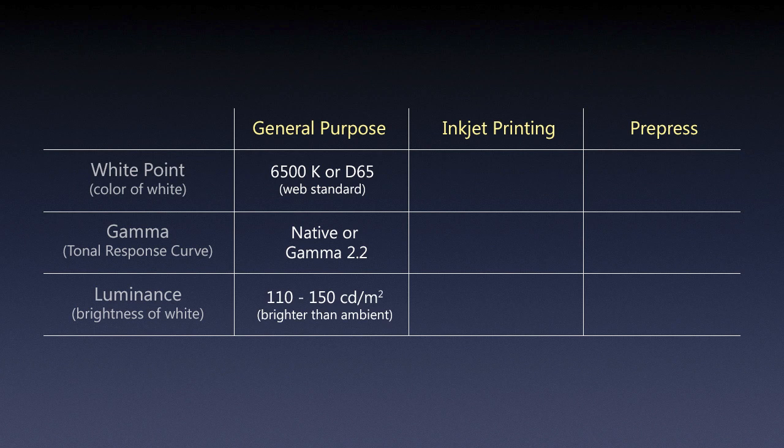As far as luminance, I would go anywhere from 110 to 150 candelas per meter squared. Remember, this is a working situation so it should be brighter than the ambient lighting. Many monitors are designed as multimedia devices and sometimes cannot go lower than maybe 130 to 140 candelas per meter squared, so 150 might also be a good target.